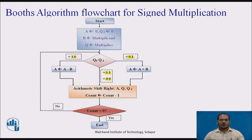Let us see the Booth's algorithm flowchart for signed multiplication. Start with the initialization — initialize the A, Q-1, B, and Q registers. Then compare the Q0 and Q-1 bits. If both are the same, that is 1-1 or 0-0, only perform an arithmetic right shift of A, Q, and Q-1.